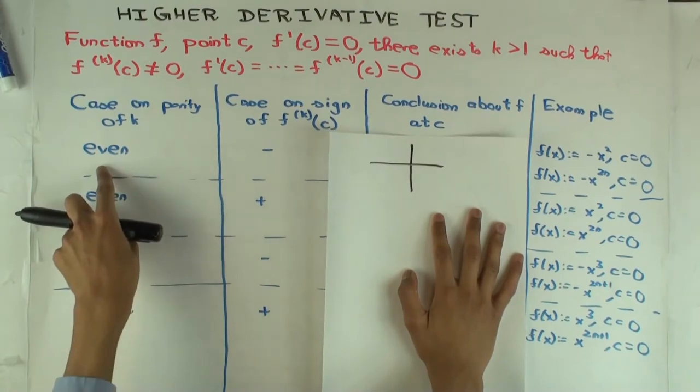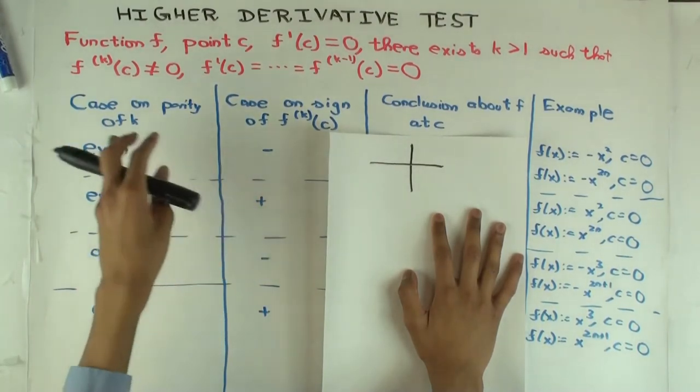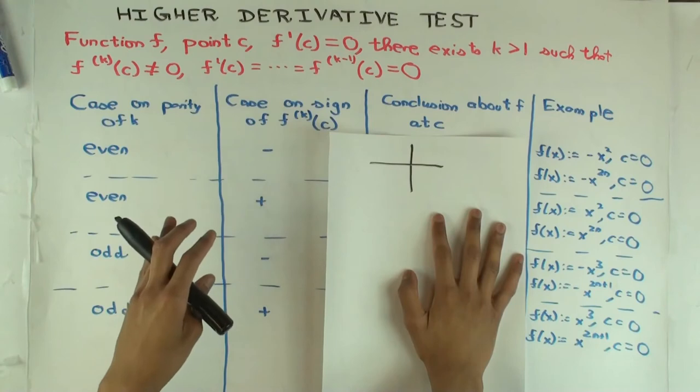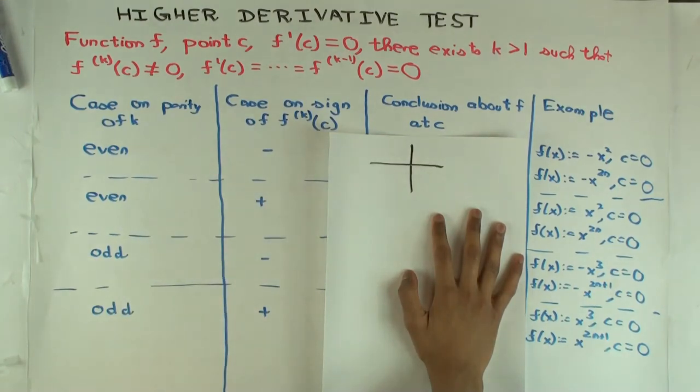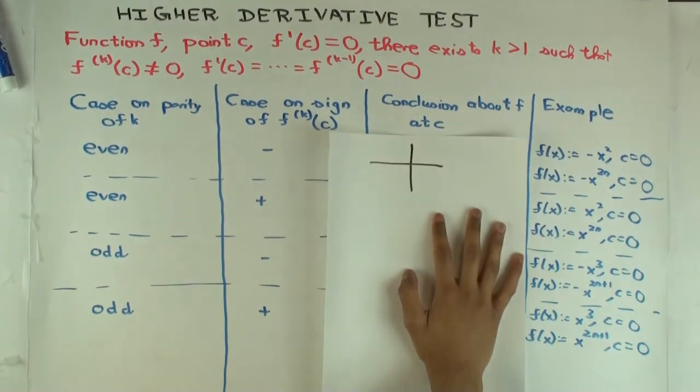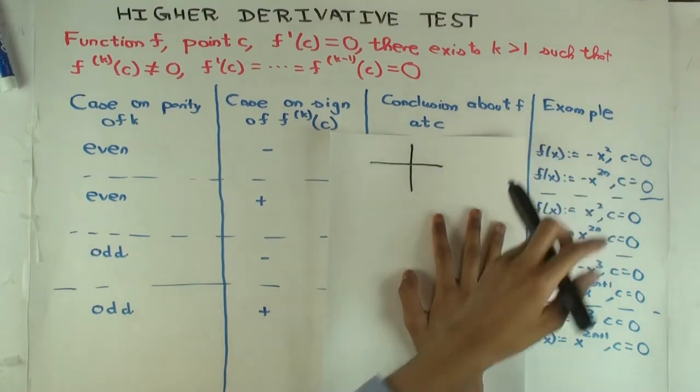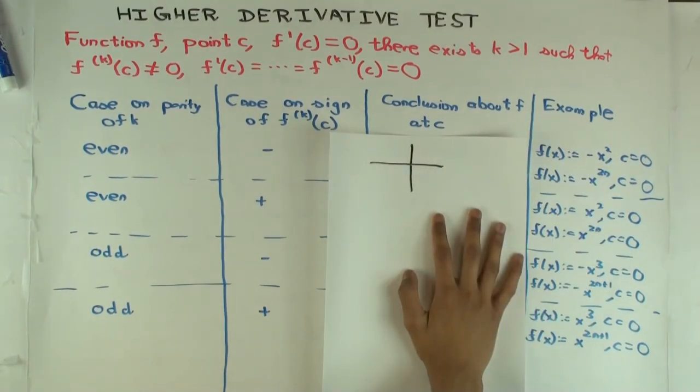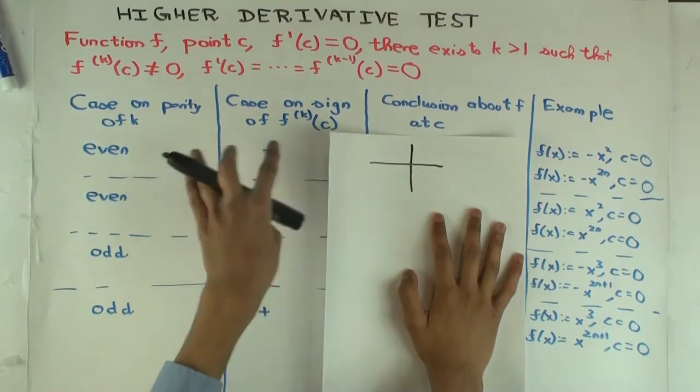So even and negative. That means you need to differentiate an even number of times to hit a non-zero value derivative. And when you do reach that non-zero value derivative, it is negative. So some examples are this. So negative x squared. How many times do you need to differentiate that at zero to get a non-zero value? Twice. And what's the value of that non-zero derivative? Negative 2. So that fits this even and negative.